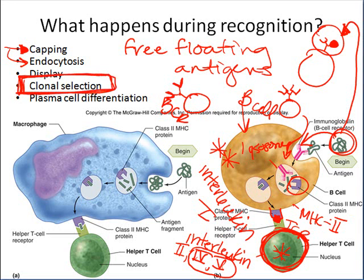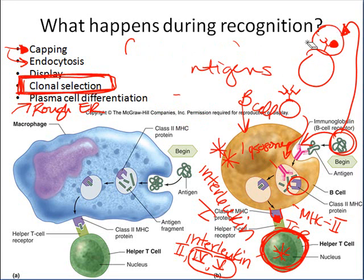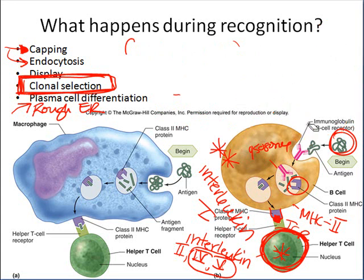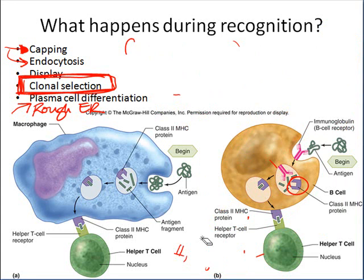During clonal selection, massive numbers of identical B cells are produced. Those cloned B cells transform — they produce huge amounts of rough endoplasmic reticulum, which is really good at manufacturing proteins intended to be exported out of the cell. In this case, that exported protein is the antibody. These transformed cells are called plasma cells, and they manufacture huge quantities of antibody, throwing out millions of copies every minute into the bloodstream.